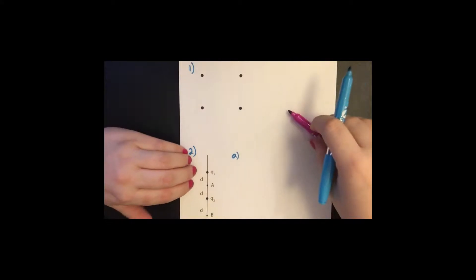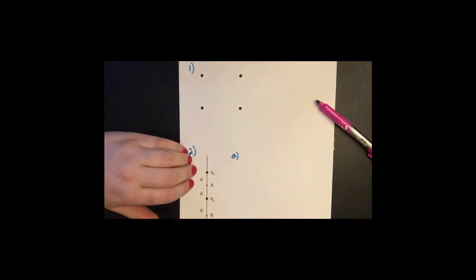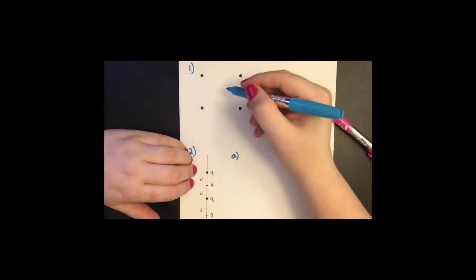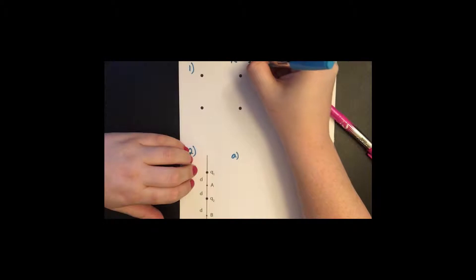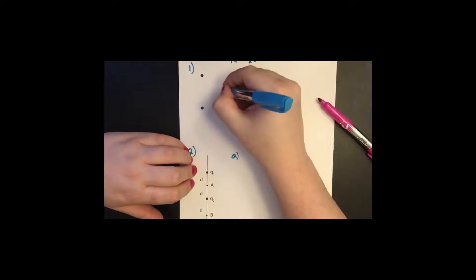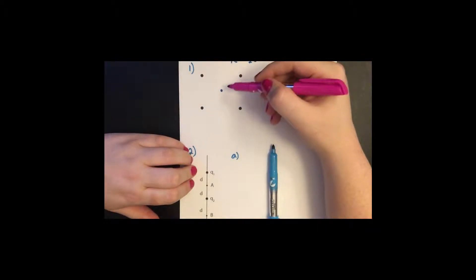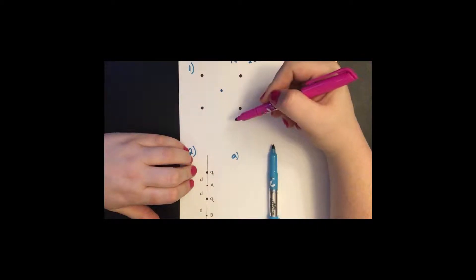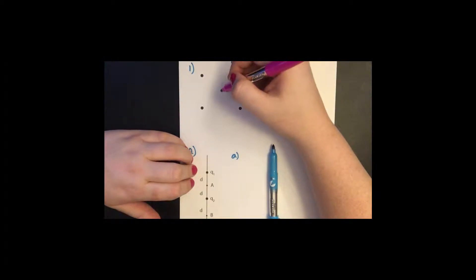Okay, so here for part A, we have four charges pinned to the corners of a square. They're all going to be positive. Two of them should be one coulomb and two of them should be two coulomb. The first thing we want to take note is, at the center, we definitely want to get rid of the vertical components,